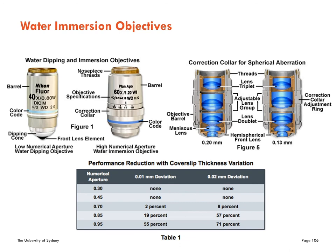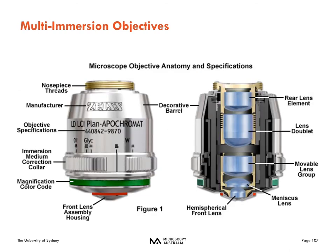You can also use multi-immersion objectives, which are very popular, particularly if you're going from a low mag lens to a higher mag lens. A low mag multi-immersion lens can work with water, glycerol, or oil — you just dial in the immersion fluid you're using, find your sample, and then don't need to clean the sample or lens when you switch to the high mag oil lens. Multi-immersion objectives are very useful.